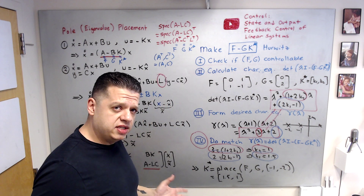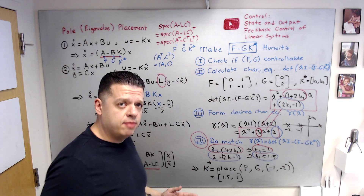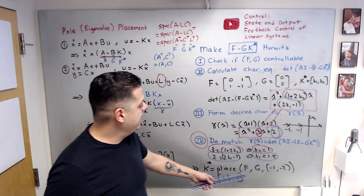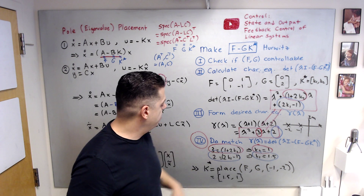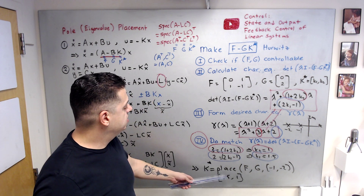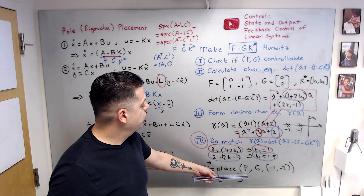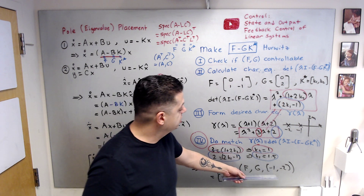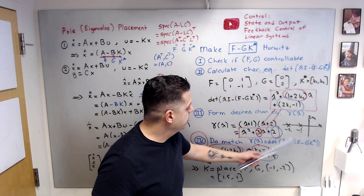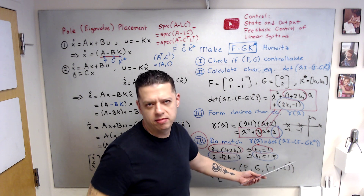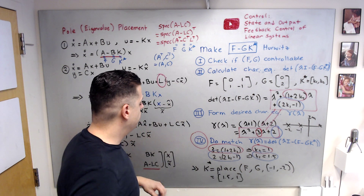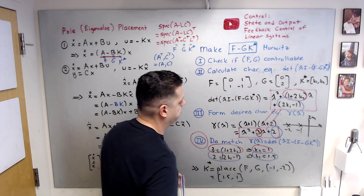You can do this faster in MATLAB. Once you know your F and G matrices, use the command `place(F, G, desired_eigenvalues)` — for example, `place(F, G, [-1, -2])`. MATLAB will return K* = [1.5, 1].